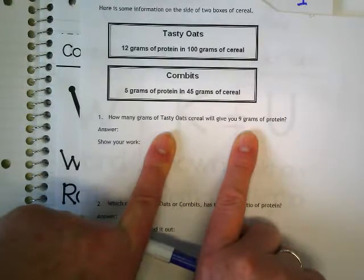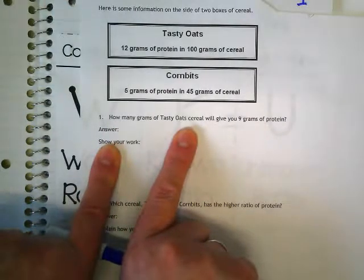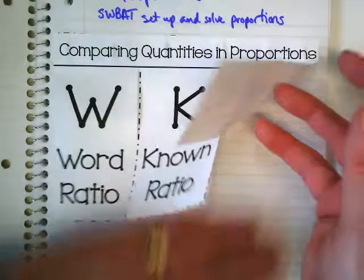What does the 9 go with? It goes with the protein and what is our unknown? The question says how many grams of cereal. So we don't know the cereal.